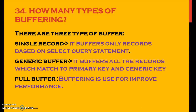In single record buffering, it buffers only the records based on a select query statement and always buffers the first field of the primary key. In generic buffering, it buffers all the records which match to the primary and generic key. You have an option to buffer one, two, three, or up to four primary key fields — but not more than the number of primary keys you have in your table. Full buffering buffers all the fields in the table, irrespective of whether it is a primary key, secondary field, or normal field, and is used for improving performance.